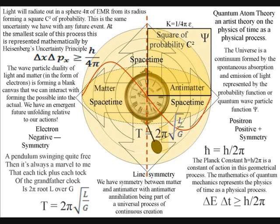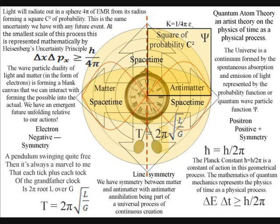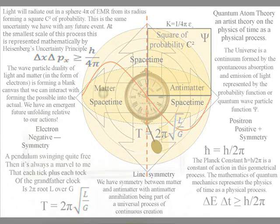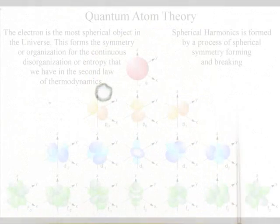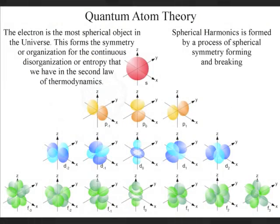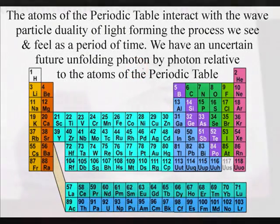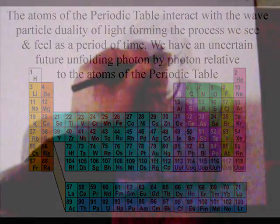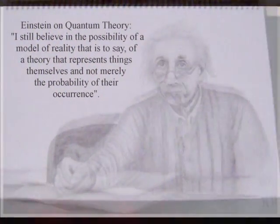In such a theory, the mathematics of quantum mechanics represents the physics of time itself, with classical physics representing processes over a period of time, as in Newton's differential equations. We have an uncertain future unfolding photon by photon, with each new photon oscillation or vibration relative to the atoms of the periodic table, with the wave-particle duality of light and matter in the form of electrons forming a blank canvas that we can interact with, forming the possible into the actual.